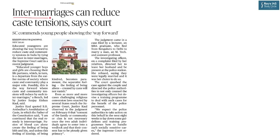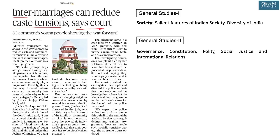There is a news article on page 10: 'Intermarriages can reduce caste tensions,' says the Supreme Court. We will cover this from two sections of GS paper. From the GS Paper 1 society section, the salient features of Indian society include caste and religion, and the institution of marriage. Intermarriages touch on caste, religion, and the peaceful existence of diversity in India.